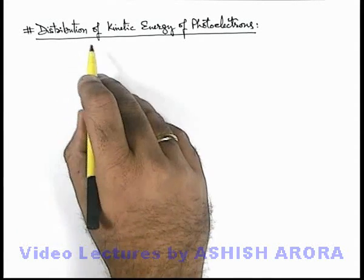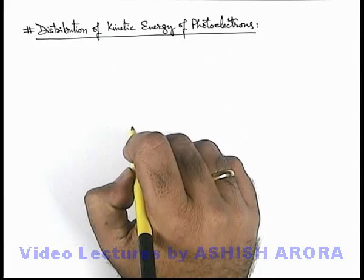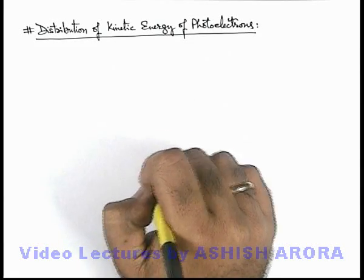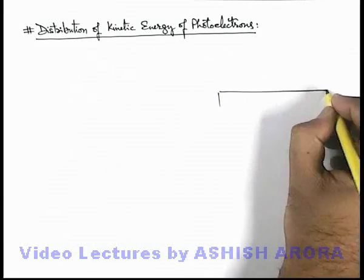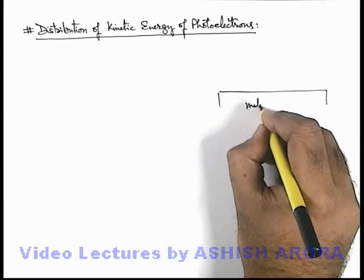Let us discuss the distribution of kinetic energy of photoelectrons in the photoelectric effect. In the previous section we discussed that if there is a metal surface